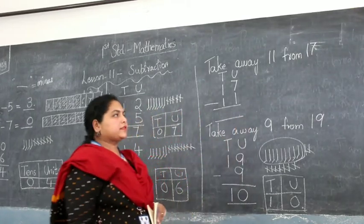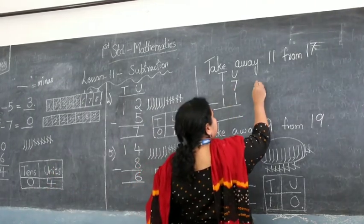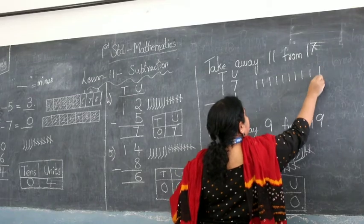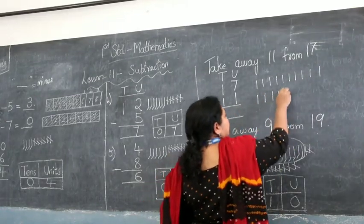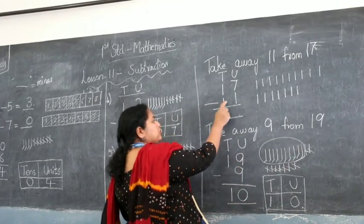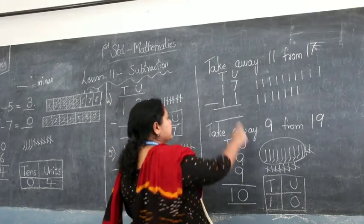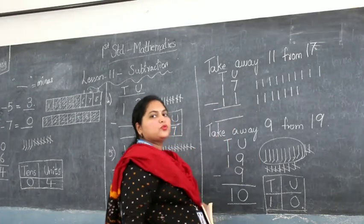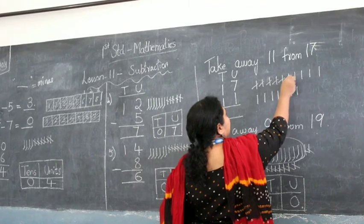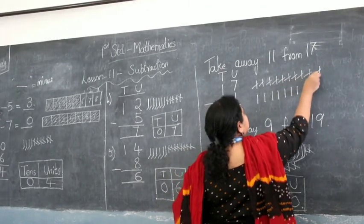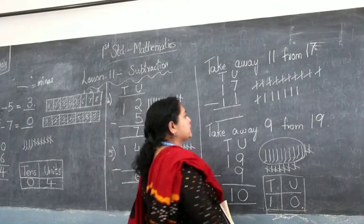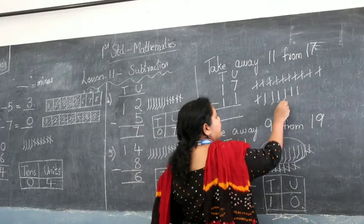So how much do I get? I will draw 17 lines: 1, 2, 3, 4, 5, 6, 7, 8, 9, 10, 11, 12, 13, 14, 15, 16, 17. So I have 17 lines. How many do I have to remove? I have to take away 11. So let's remove 11 lines: 1, 2, 3, 4, 5, 6, 7, 8, 9, 10, 11. I removed 11 lines. What am I left with? 1, 2, 3, 4, 5, 6.